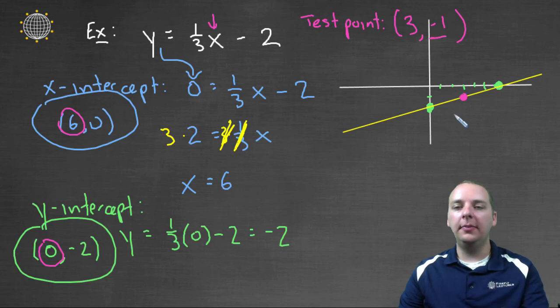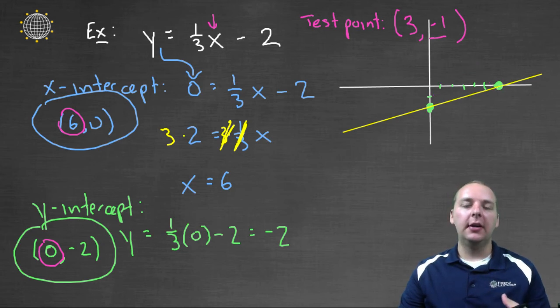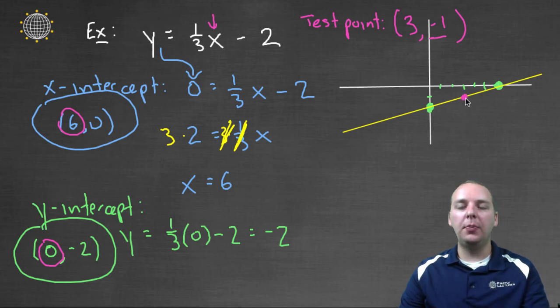Your two intercepts and your test point should all line up in a straight line. Now hypothetically, let's say we made a mistake, and maybe one of these points was here or something like that, well that doesn't make a straight line. And so either my test point, or my x or y intercept would be incorrect. And so that's what the test point is, it's a fail safe, it's a thing that makes sure that you're doing the problem correctly, and that you're getting the right answer.